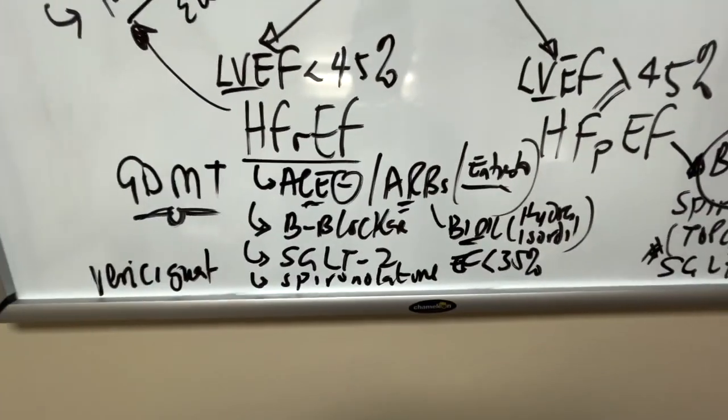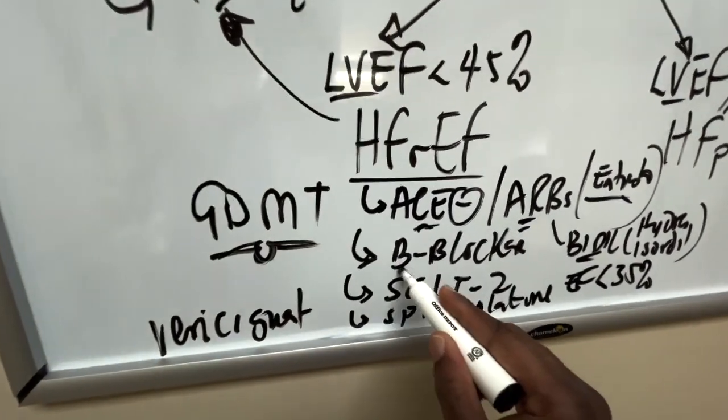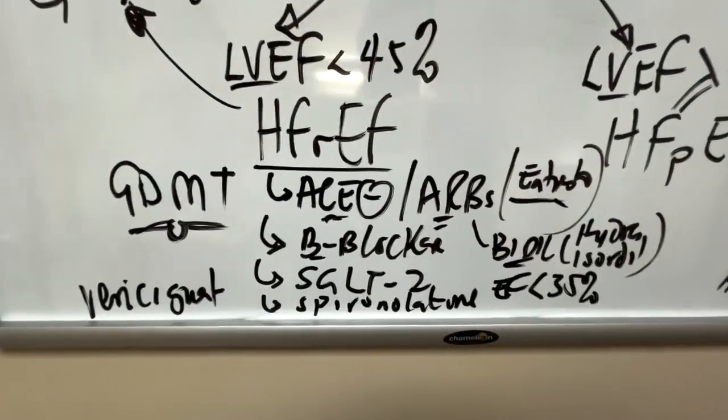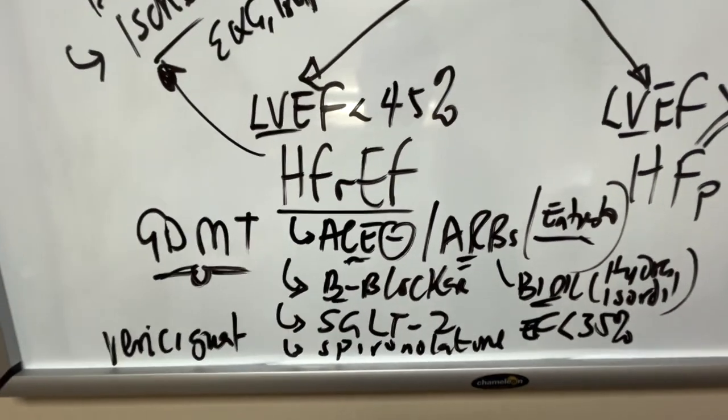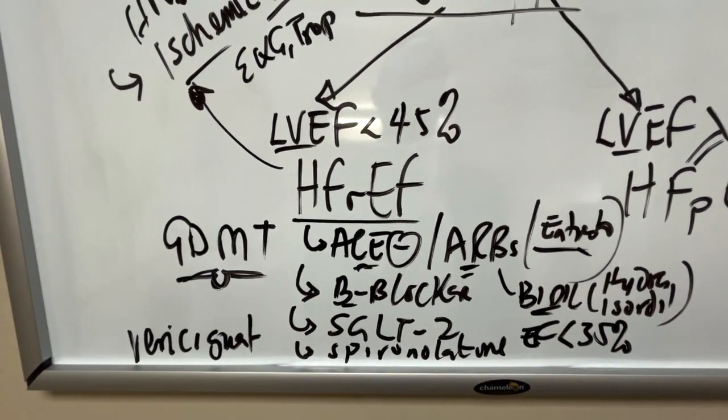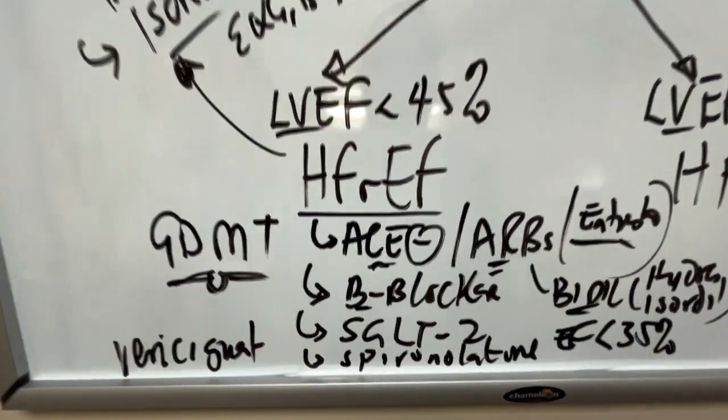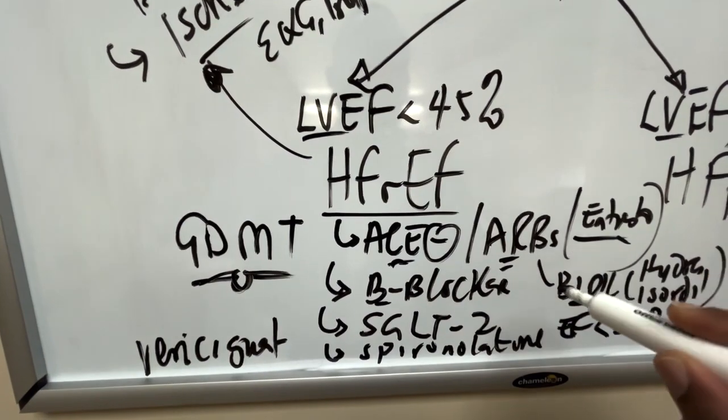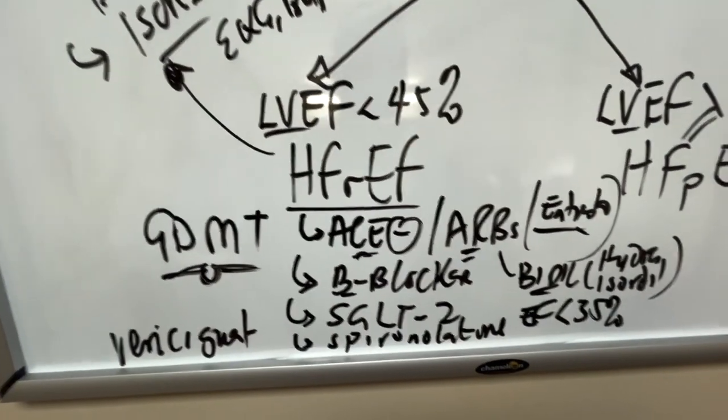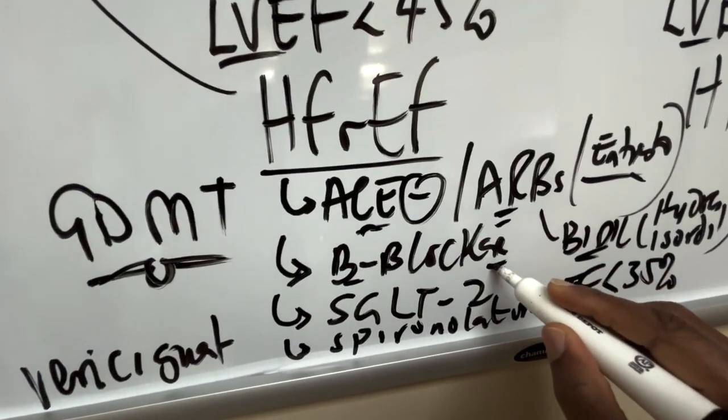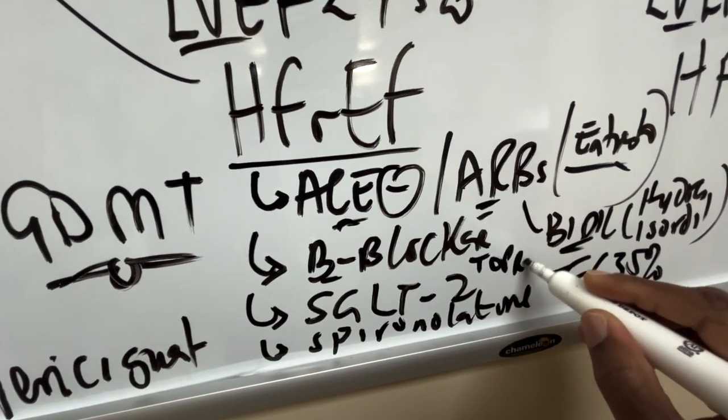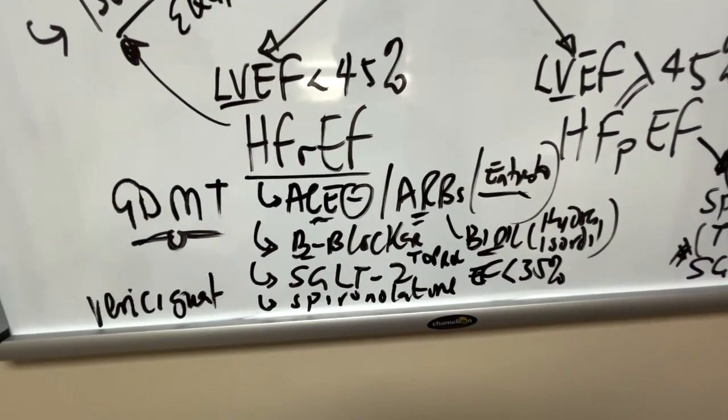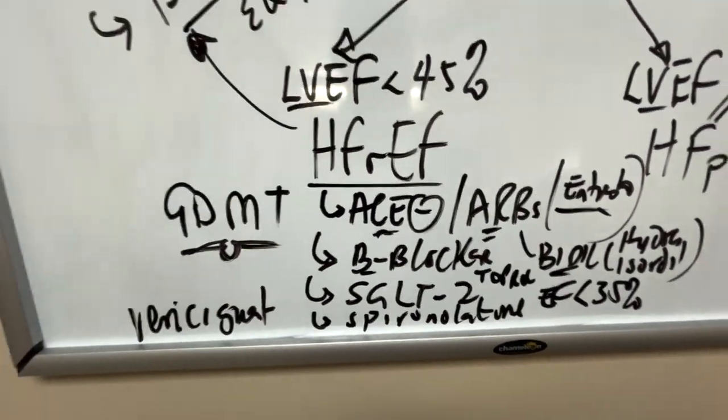Beta blocker will be the next medication on that list that provides mortality benefit. The guideline-directed beta blocker in this case with heart failure with reduced ejection fraction, if you had to be specific, will be Toprol, which is metoprolol succinate. That's the one used in most of the trials, a once a day medication.